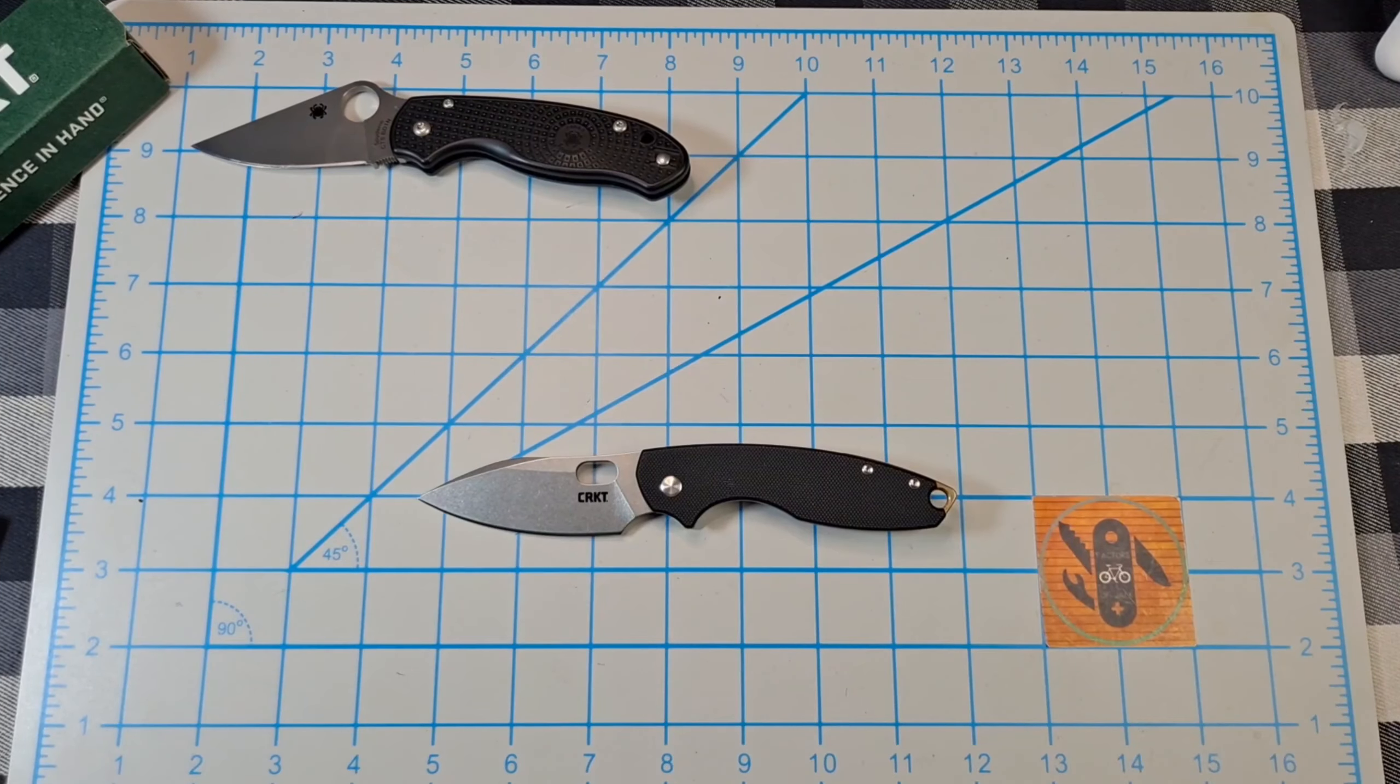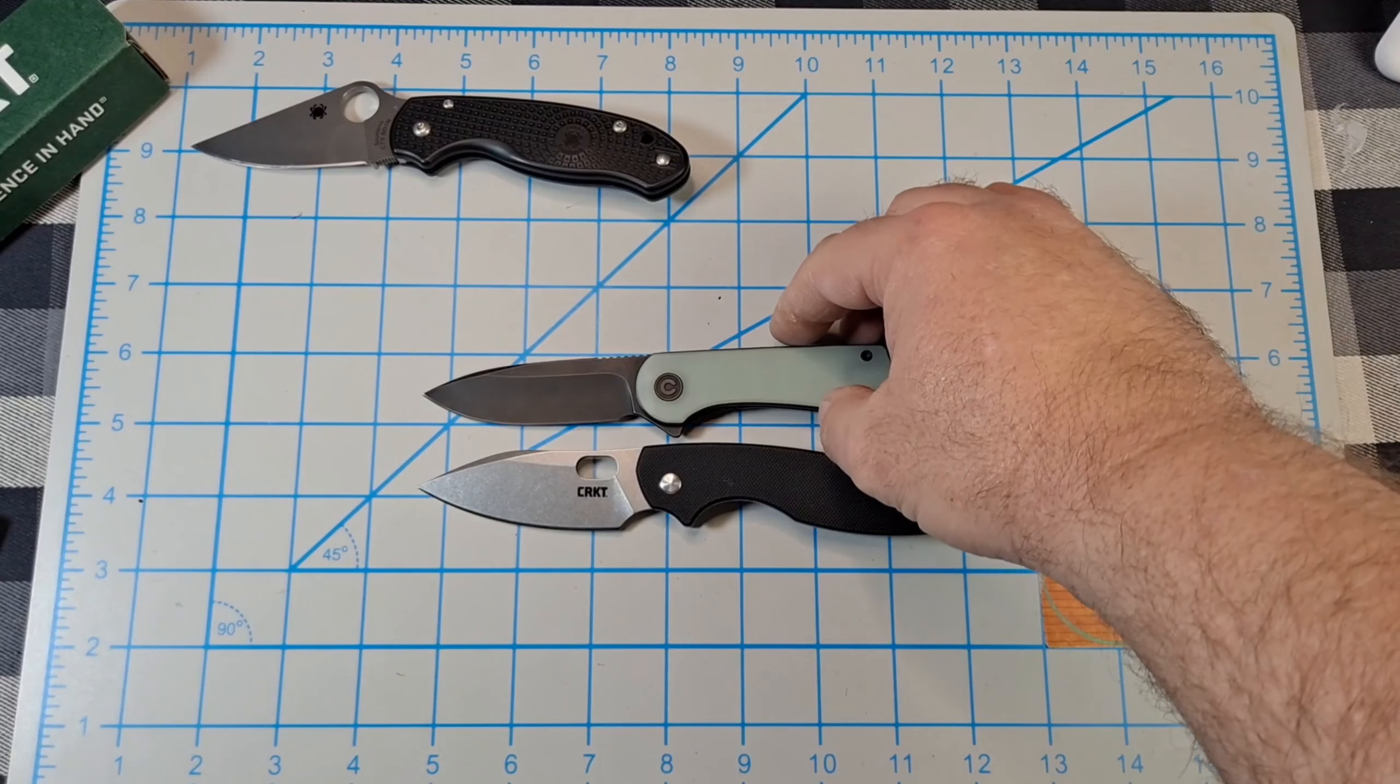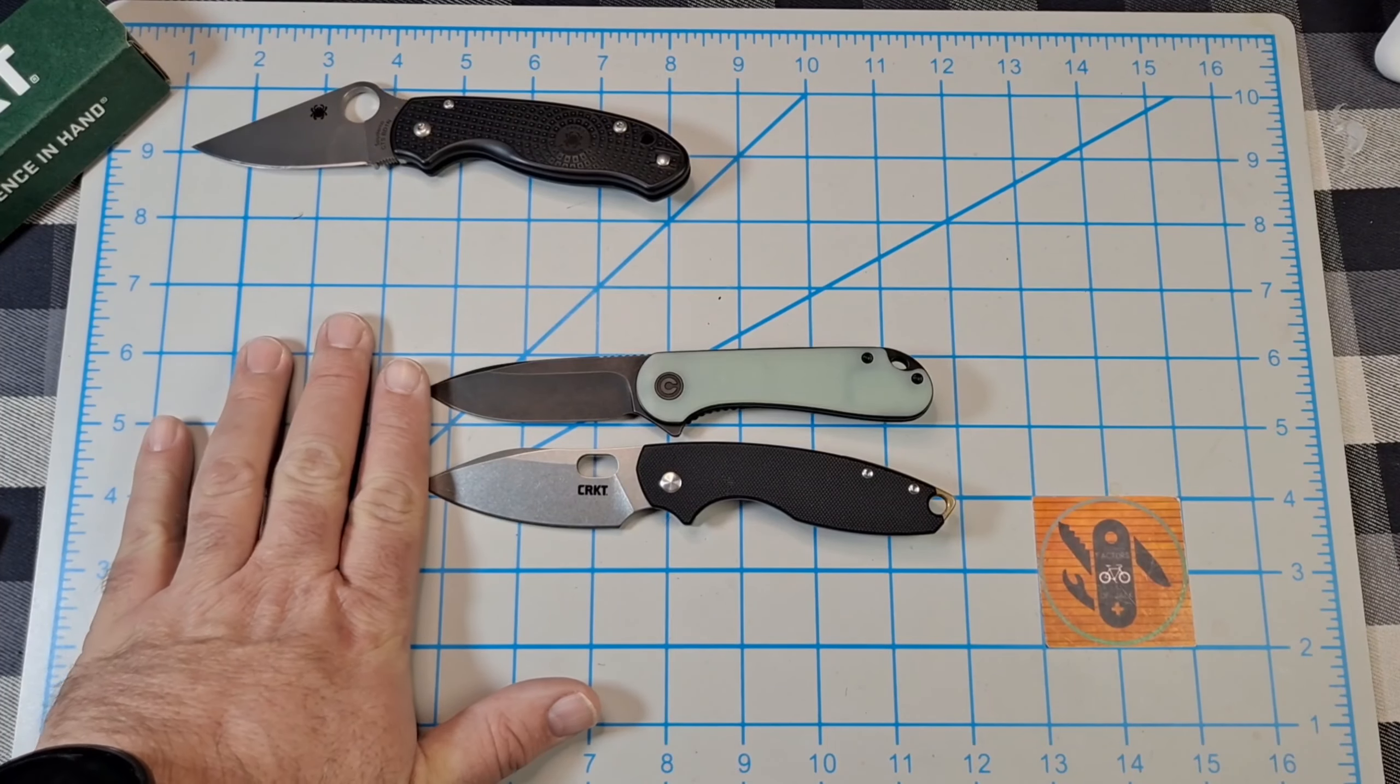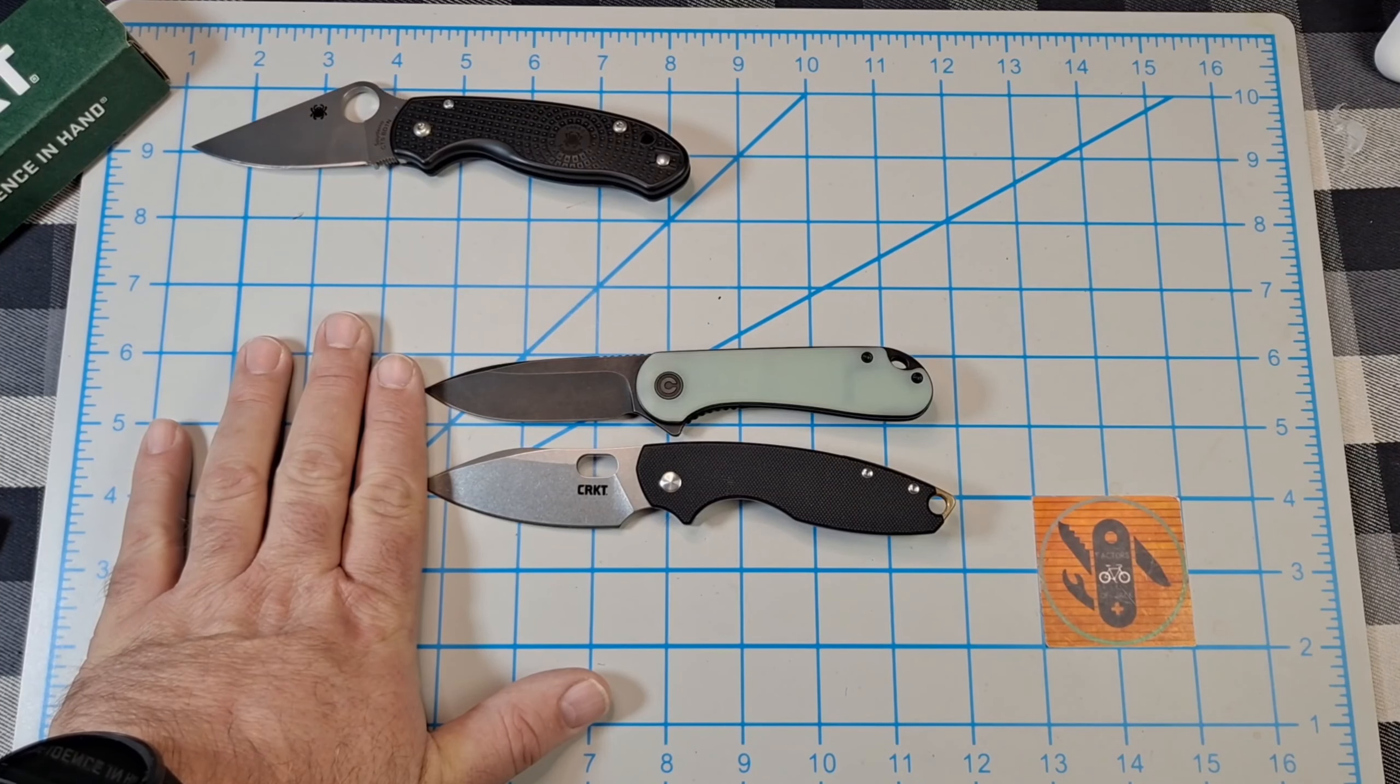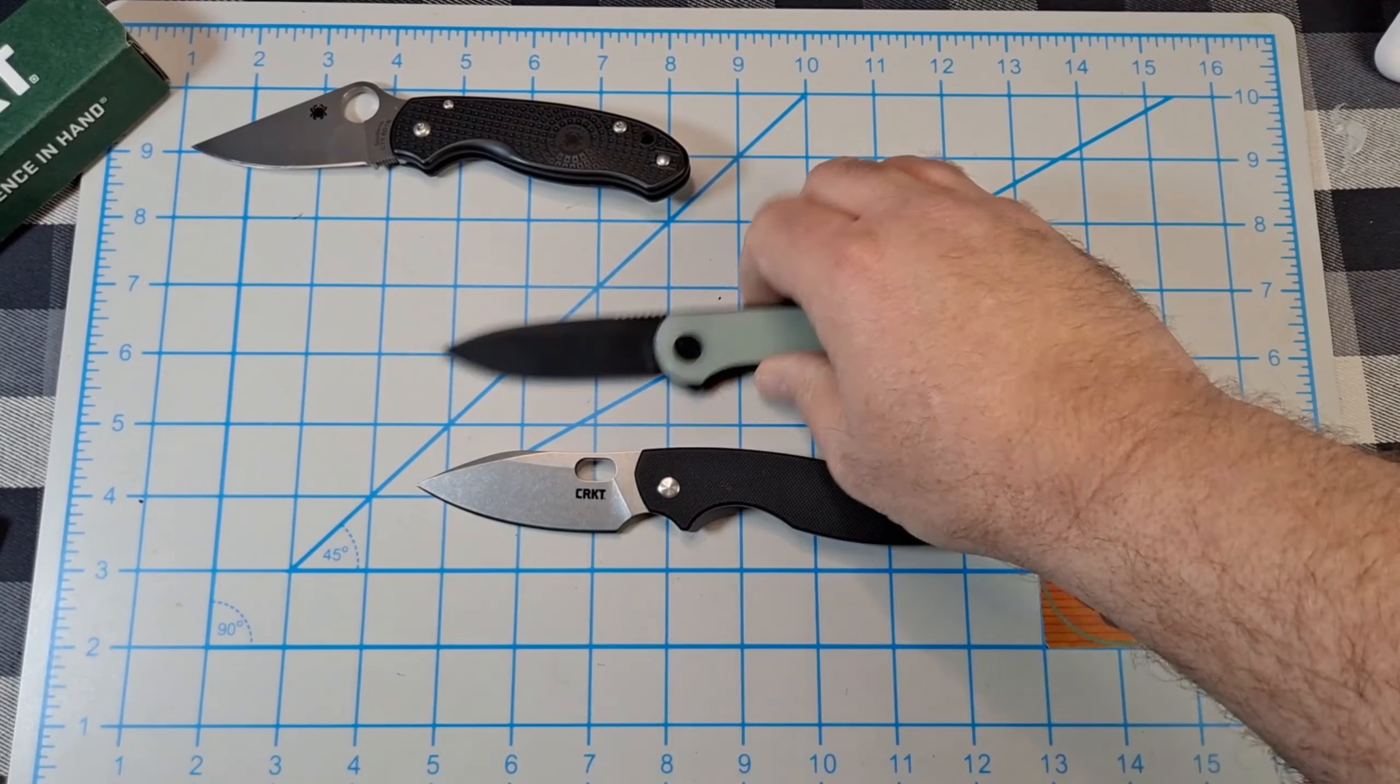Let's bring out the Civivi Elementum. Pretty close. Line up the pivots - the blade on the Elementum is actually a little bit longer. The handle on the Pilar is a little bit longer, especially if you add on that backspacer.